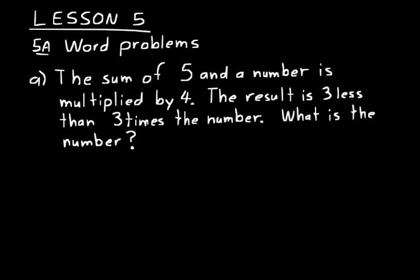This problem says: the sum of five and a number is multiplied by four. The result is three less than three times the number. What is the number? Your first step on a word problem should always be to read through it and figure out what you're doing — you're trying to find what the number is. There's always a question you're trying to answer in a word problem, so find that first.